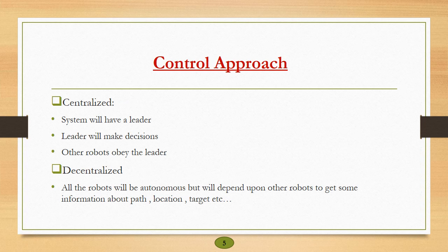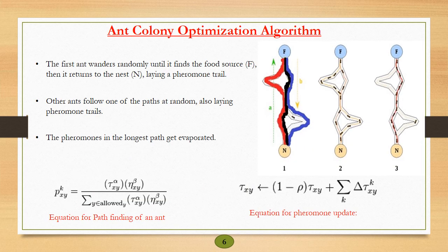In the previous slide, we saw the video of an ant. It's actually an example of a decentralized control approach. Ant colony optimization algorithm is actually derived from collective behavior observed in ants.